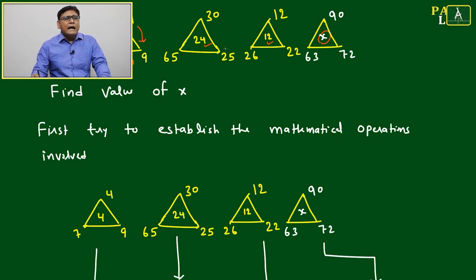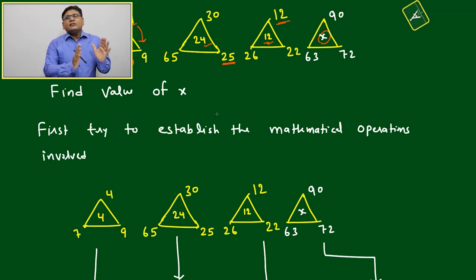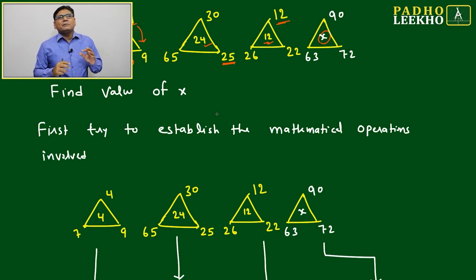The two-digit center numbers are mostly near the lowest periphery number. For example, 24 is nearest to 25, and 12 to 12 itself. This suggests that if we add the numbers, the average will be close to these center values.